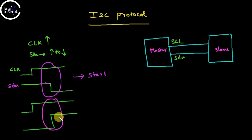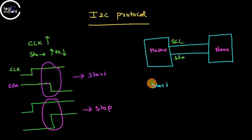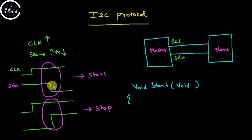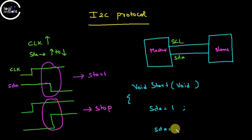Now let's see how to write this programmatically. I'm writing a function called 'start' with void return type and void parameters. The main criteria is to make the SDA line go from high to low, so I write SDA equal to 1 (high) and then SDA equal to 0 (low).